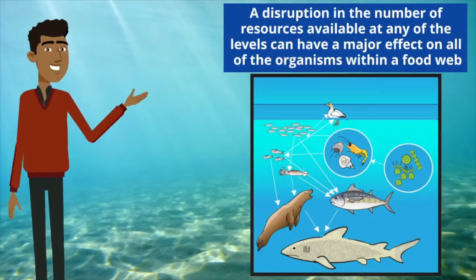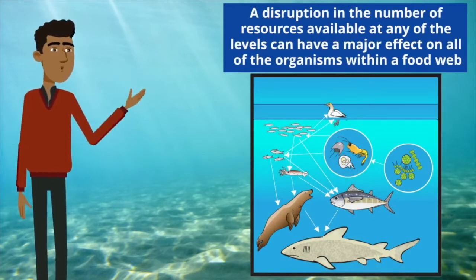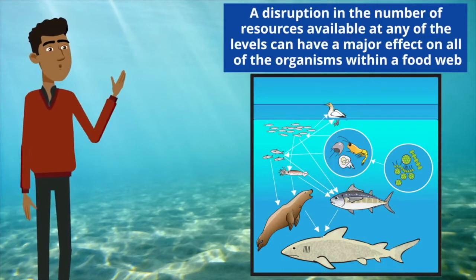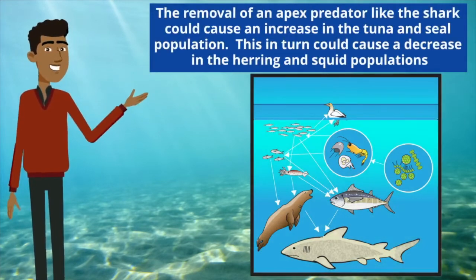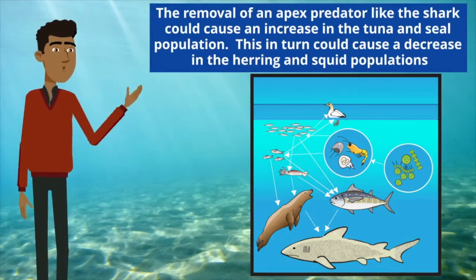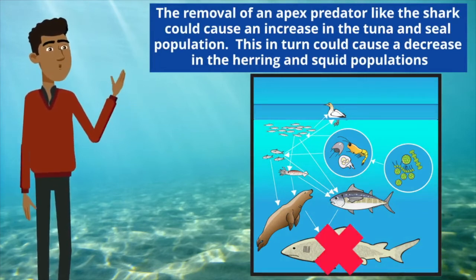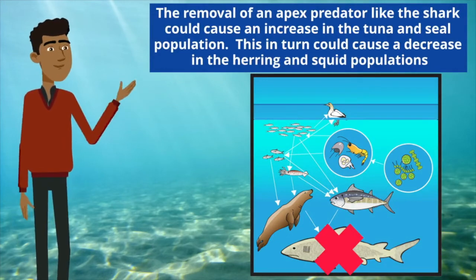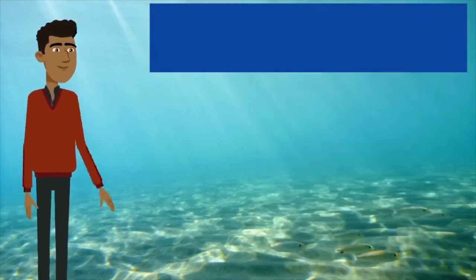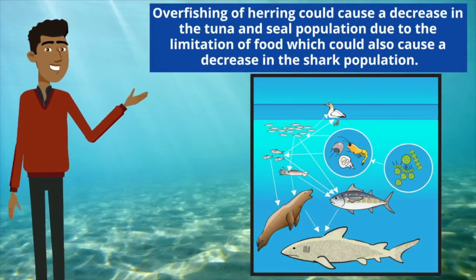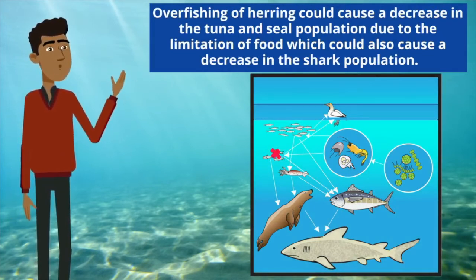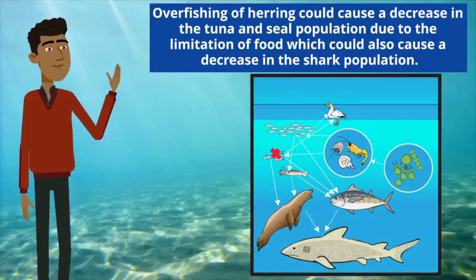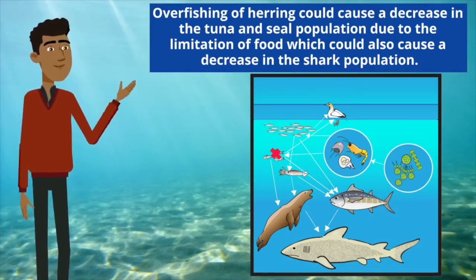A disruption in the number of resources available at any of the levels can have a major effect on all the organisms within a food web. The removal of an apex predator, like the shark, could cause an increase in the tuna and seal population. This, in turn, could cause a decrease in the herring and squid populations. Overfishing of herring could cause a decrease in the tuna and seal population due to the limitation of food, which could also cause a decrease in the shark population.